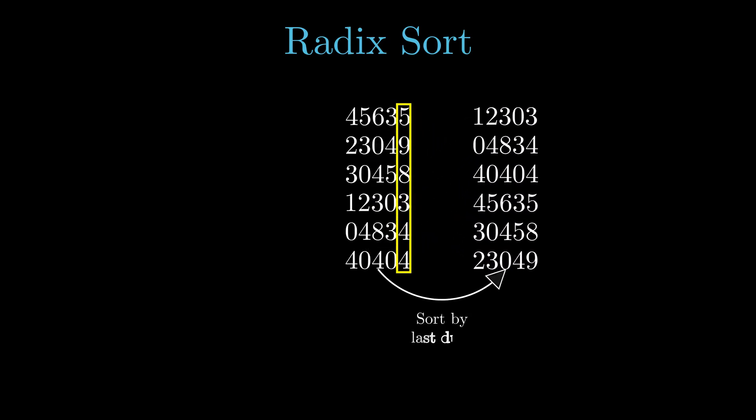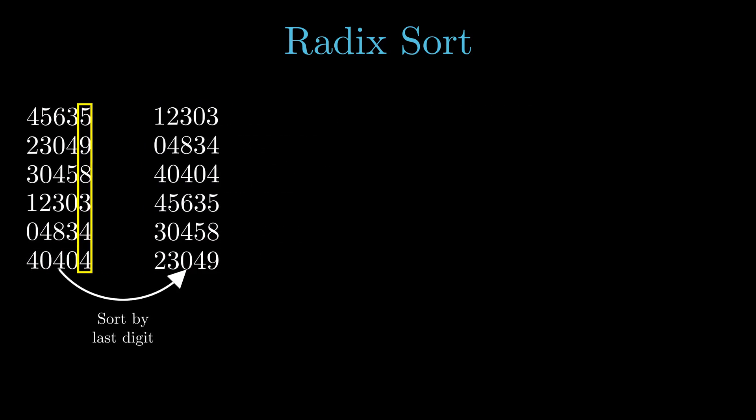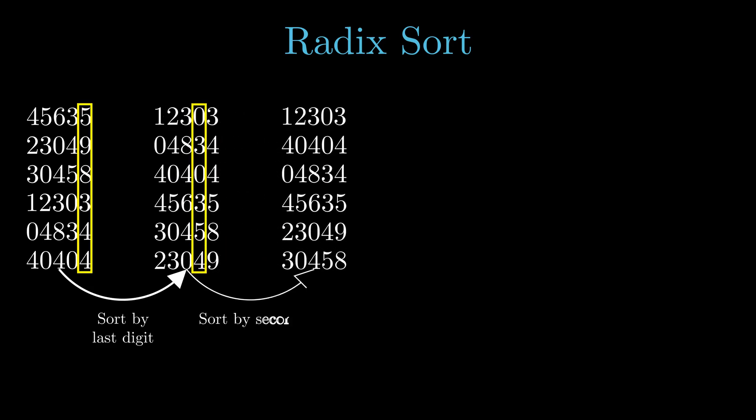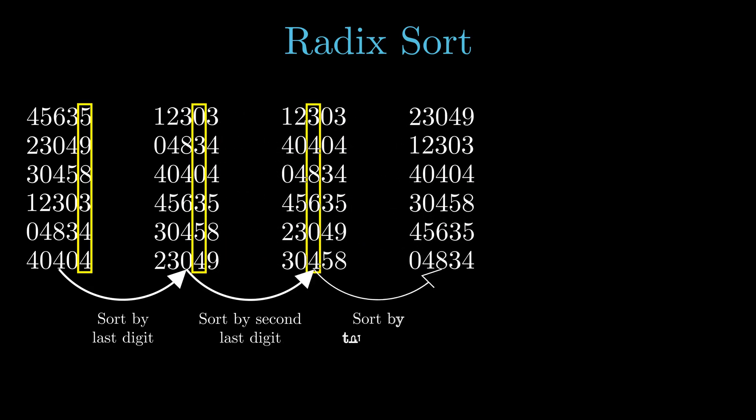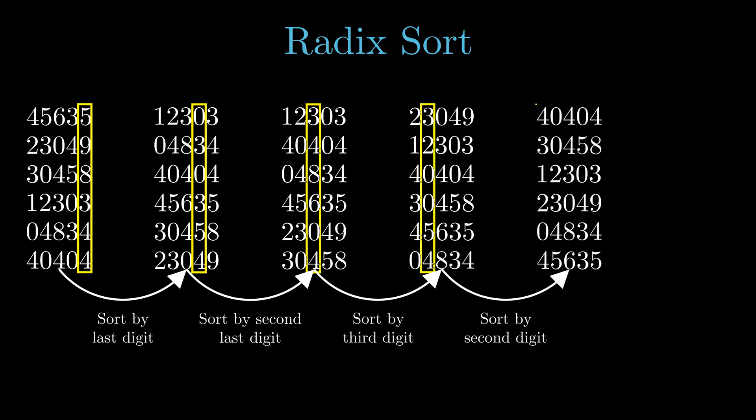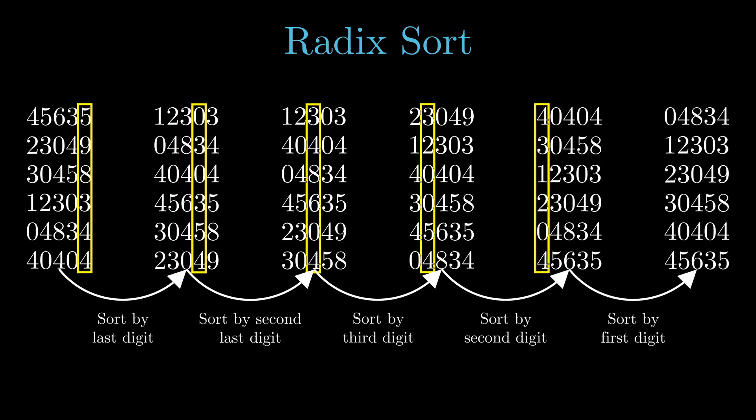We first sort these numbers by the last digit. To do this sort, we use some other sorting algorithm suited for such a task like perhaps counting sort. We then sort the resulting list by the second last digit, by the third last digit, by the second digit and finally the first digit.